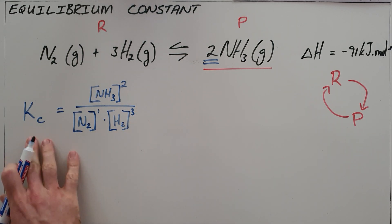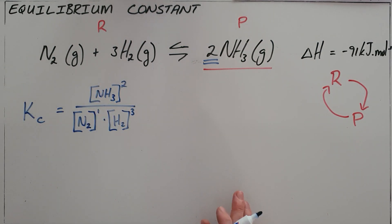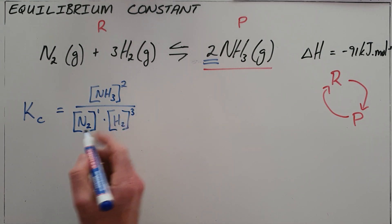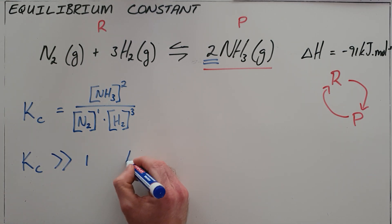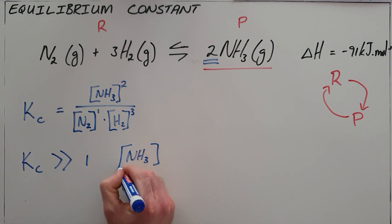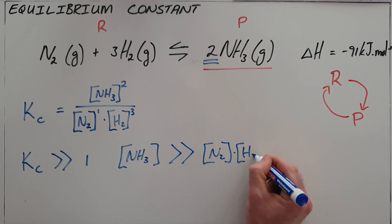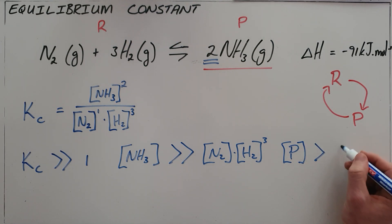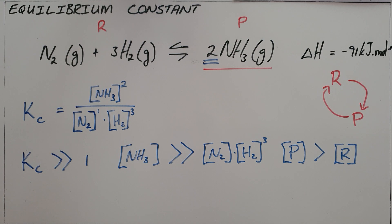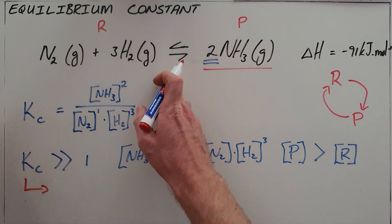By looking at our value for Kc it can inform us as to how much of the reactants is present and how much of the products is present. If Kc is a number much bigger than one, that means the concentration of ammonia is much bigger than the concentration of nitrogen and hydrogen combined. This tells us our concentration of products is greater than the concentration of reactants, and we say that equilibrium lies to the right — on balance there are more products present than reactants.